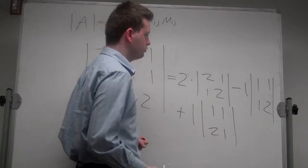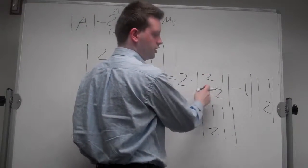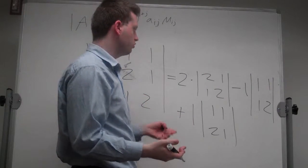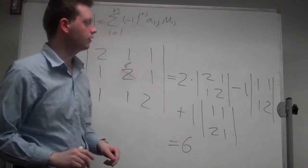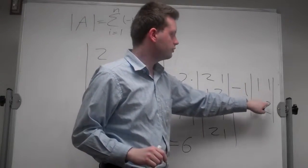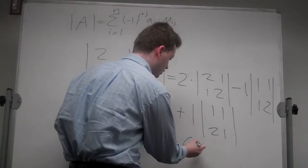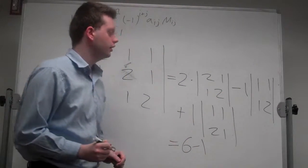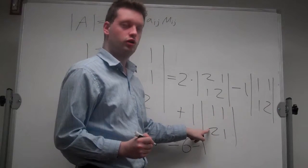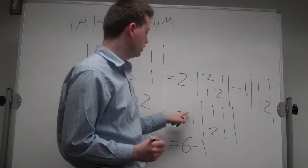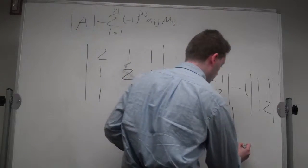In this case, it's very simple. 2 times 2 minus 1 times 1 is 3, times 2 is 6. Minus 1 times (2 minus 1) is minus 1. And the last one, 1 minus 2 equals minus 1, times 1 is minus 1. We get the determinant of 4.